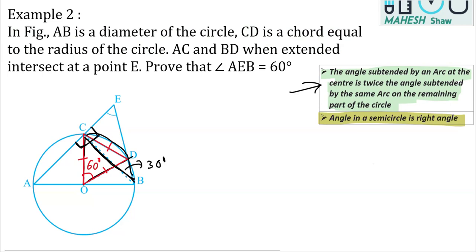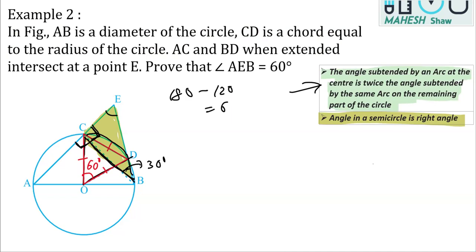Now consider just this triangle. We have calculated two angles: angle ABE is 30 degrees and the angle from linear pair is 90 degrees. Using the angle sum property, we can find the third angle AEB: it equals 180 minus 120, which is 60 degrees.